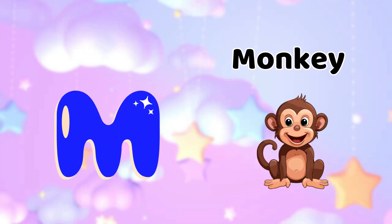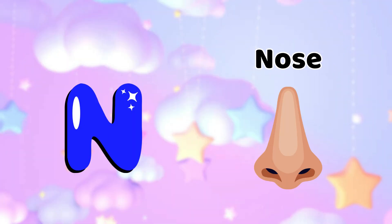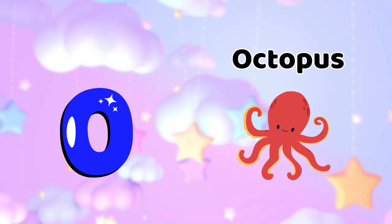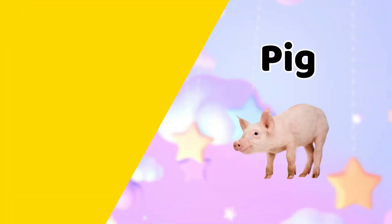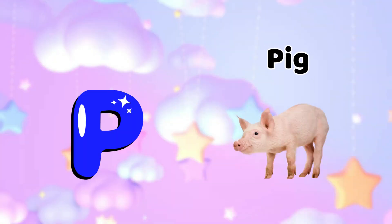M is for Monkey, M-monkey. N is for Nose, N-nose. O is for Octopus, O-O-Octopus. P is for Pig, P-P-Pig.